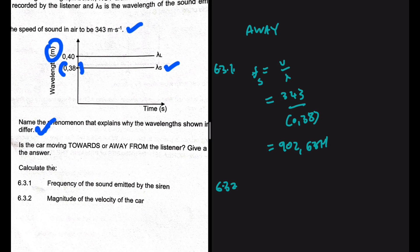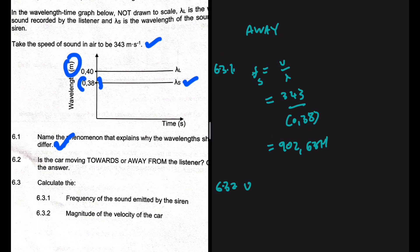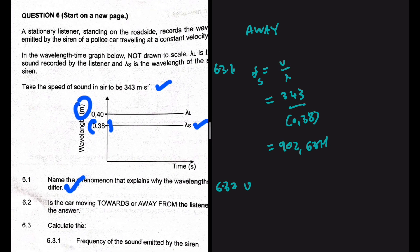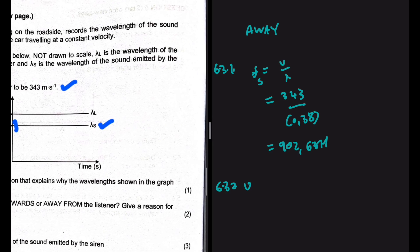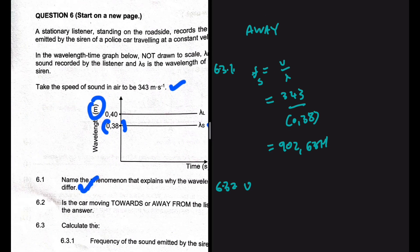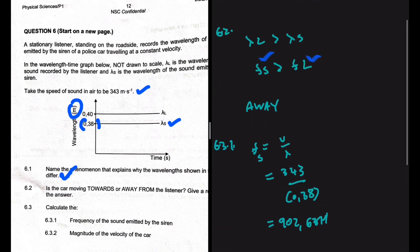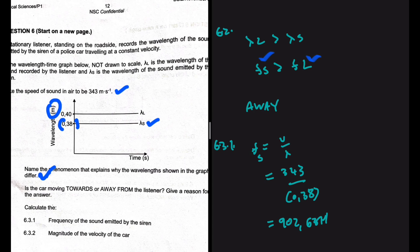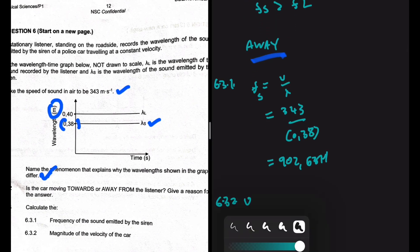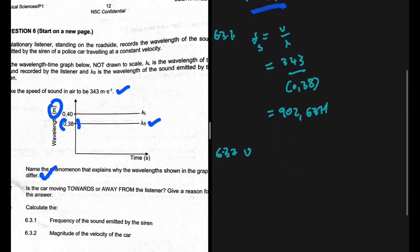Question 6.3.2: find the magnitude of the velocity of the car — the last question in question 6. The car is the sound source. Going back to the question: the listener is stationary, so it is the car — the sound source — that is moving away. We are looking for the velocity of the sound source, v_S.